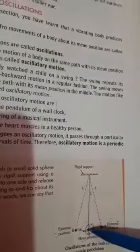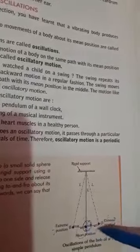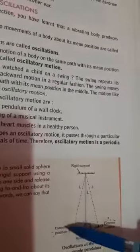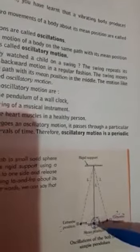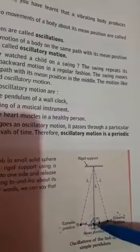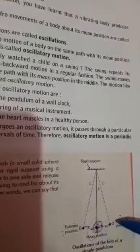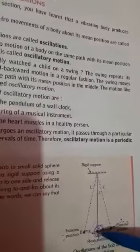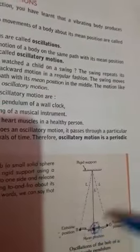The body vibrates from the mean position to an extreme position, comes back to mean, goes to the other extreme, and comes back to mean. When we push the body against point A, it goes to C, comes back to A, then goes to B, and comes back to A. This one complete to-and-fro motion is known as oscillatory motion.